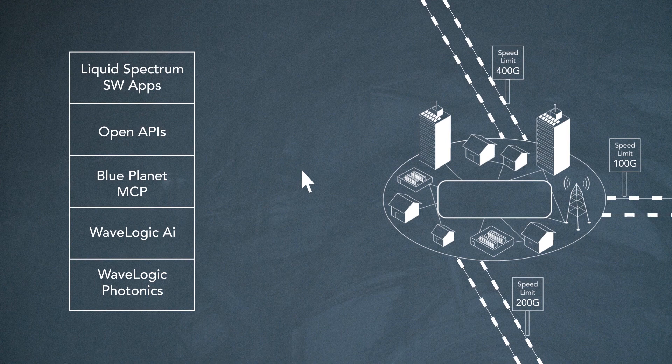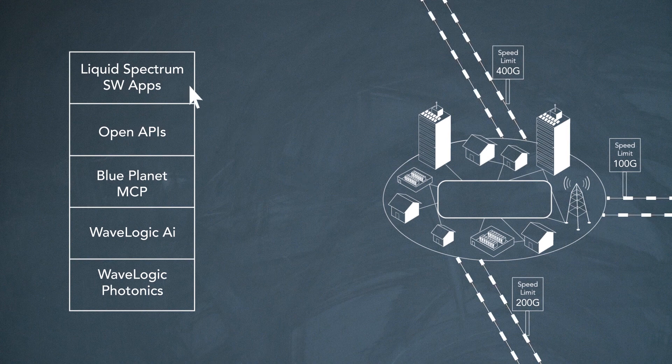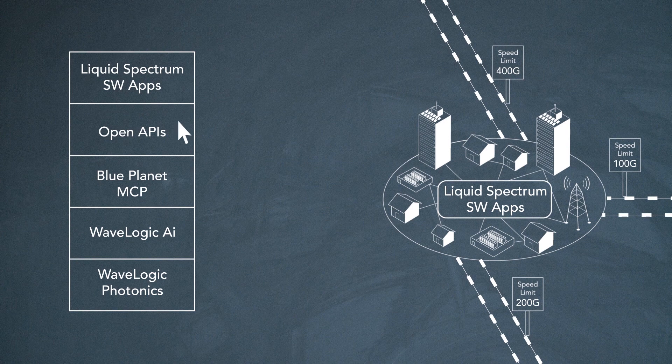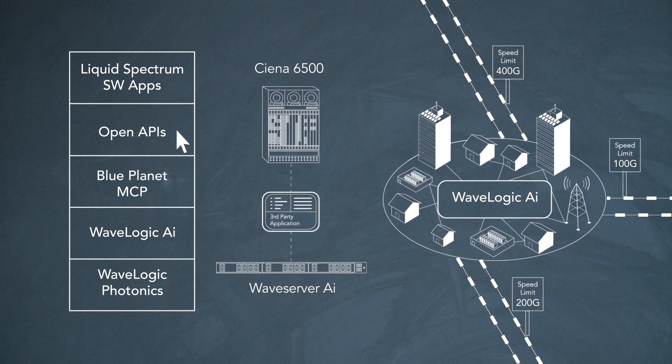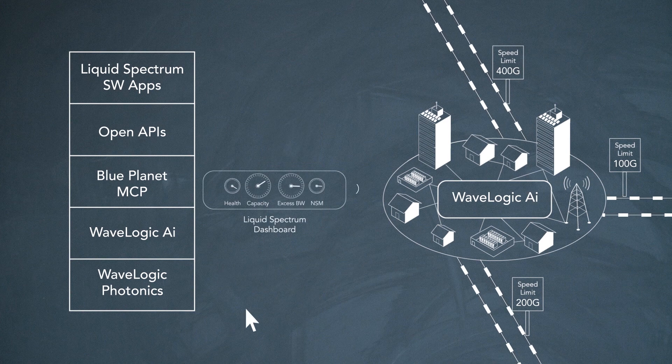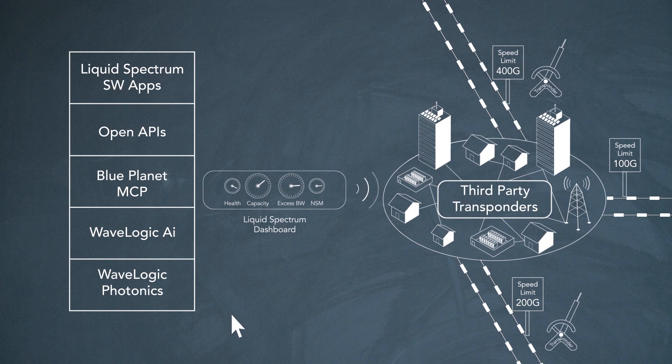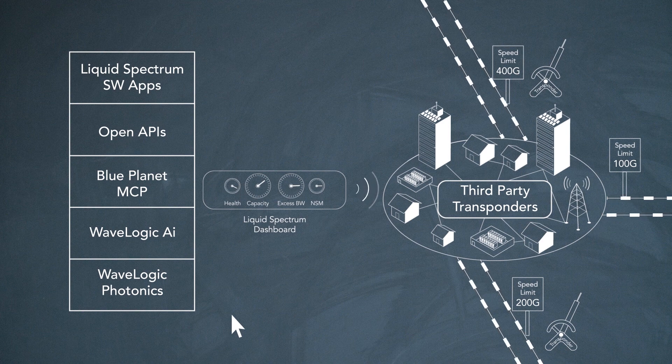A user can select whatever elements are appropriate for their network. As an example, they can use Liquid Spectrum applications to increase service availability and system capacity over a Sienna system. Or they can deploy WaveServer AI over a Sienna photonic layer and optimize network capacity using their own customized applications, accessing the platforms via OpenAPIs. They can even use a Liquid Spectrum software application to automate provisioning and optimize system performance for another vendor's transponders over a Sienna line system.